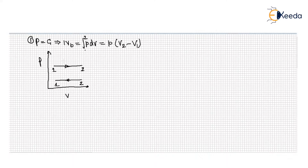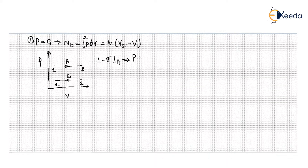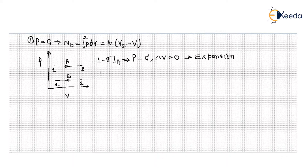Let's say this is process A and this is process B. If you are talking about process 1 to 2, this is the upper path B at constant pressure, and the change in volume is positive — that means this is expansion. For process 1 to 2 along upper path B, the change in volume is negative — that is compression.